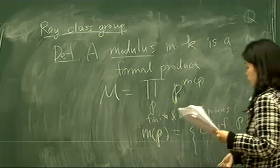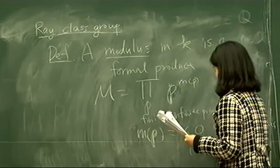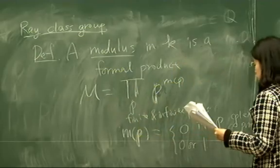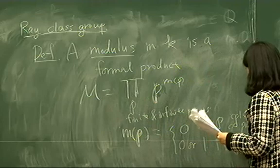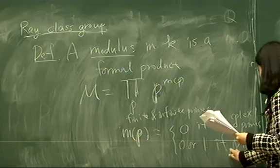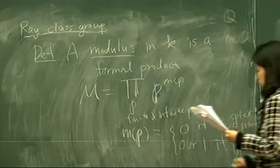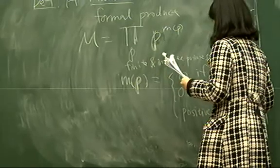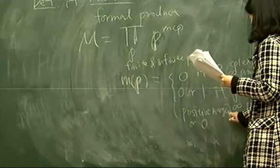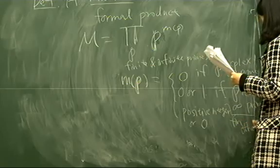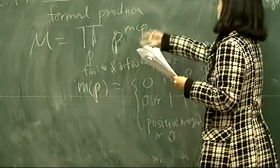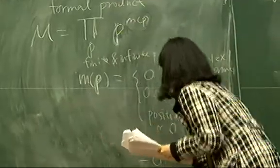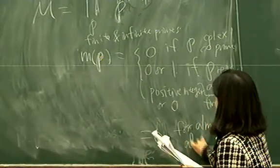For a real infinite prime — that is, one coming from a real embedding — the exponent in the modulus is either 0 or 1, chosen arbitrarily depending on the situation. For finite primes, there is no such restriction, except that only finitely many primes may have a non-zero multiplicity; that is, the exponent should be 0 for almost all primes.